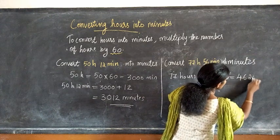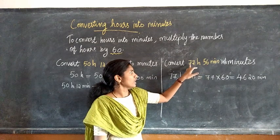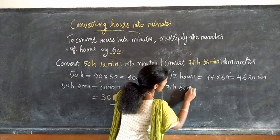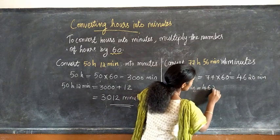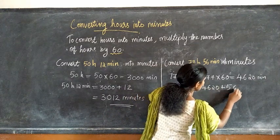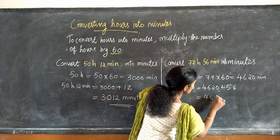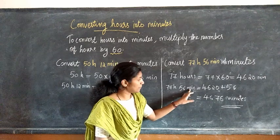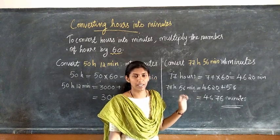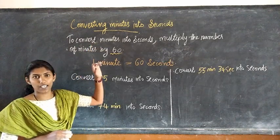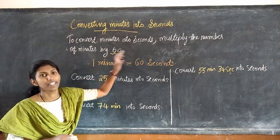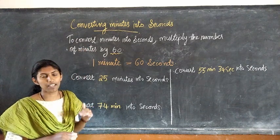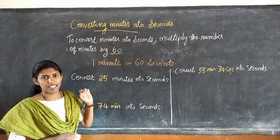Next question: convert 77 hours 56 minutes into minutes. First, we have to convert 77 hours into minutes. 77 hours equal to 77 into 60, that is equal to 4620 minutes. Then, 77 hours 56 minutes equal to 4620 plus 56, that is equal to 4676 minutes. Once again, 77 hours 56 minutes equal to 4676 minutes.